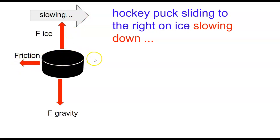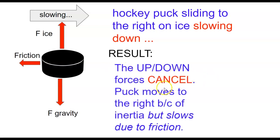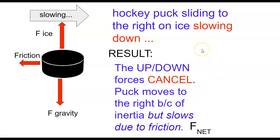That's what makes this interesting and challenging. The up-down forces cancel. The puck continues to move to the right because of inertia, but now we see it slows down due to friction acting backwards. The one thing you can count on with friction is it always acts backwards. This is another example of a net force acting on the puck causing it to change its speed — what we call acceleration. More about acceleration in the lessons to follow.